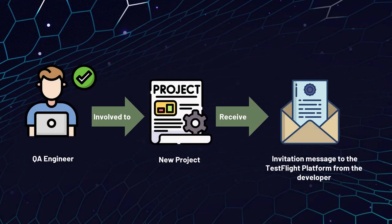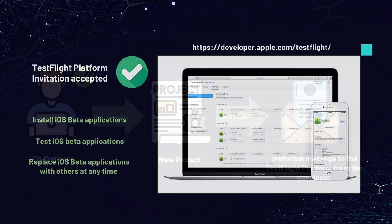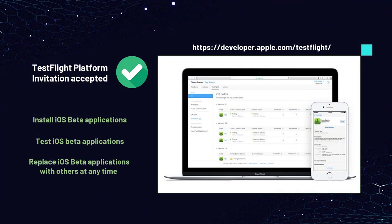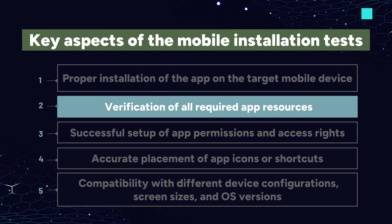Usually, when you are involved in a project that requires you to test an iOS mobile app, developers invite you to the TestFlight platform by sending an invitation to your email or sharing a public link to the beta builds. After accepting your email or public link invitation, you will see the option to test the apps in TestFlight. You can install the beta app on your device, test them and replace one with the other at any time. To find more details about this platform, follow the link for the official TestFlight platform resource.